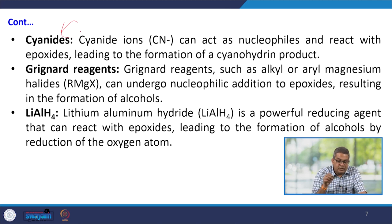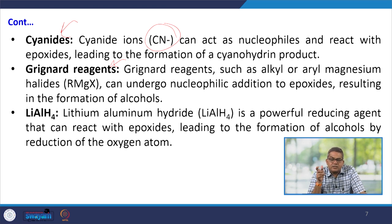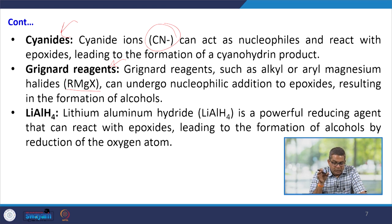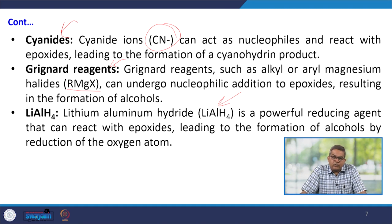Cyanide ions (CN⁻) can act as a nucleophile and react with epoxides, leading to the formation of a cyanohydrin product. Grignard reagents such as alkyl or aryl magnesium halides (RMgX) can undergo nucleophilic addition to epoxides, resulting in the formation of alcohols. Lithium aluminum hydride (LiAlH₄) is a powerful reducing agent that can react with epoxides, leading to the formation of alcohols by reduction of the oxygen atom.